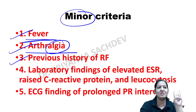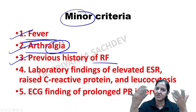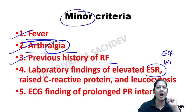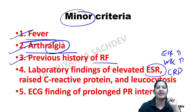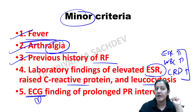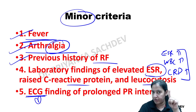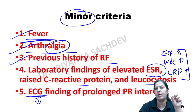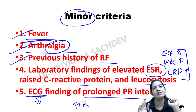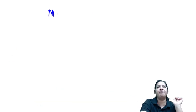Summary of the five major and five minor criteria: major — migratory polyarthritis, carditis, Sydenham's chorea, erythema marginatum, subcutaneous nodules; minor — fever, arthralgia, elevated ESR/CRP/WBC, prolonged PR interval on ECG, and previous history of rheumatic fever.